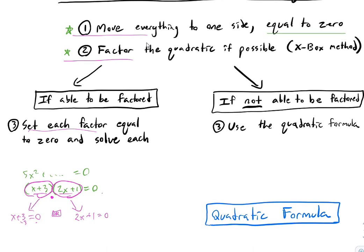So: move everything to one side — that's step one. Factor is step two. Then set each factor equal to 0 and solve each one like a linear equation. Subtract 3 from both sides: x equals negative 3. That's one answer. Or, for the second: 2x equals negative 1, divide by 2, x equals negative one-half. That's our big new plan.